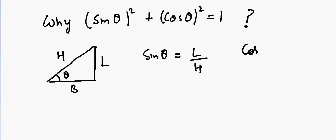cosine of theta, that should be equal to base divided by hypotenuse. So if I square this, sine theta squared plus cosine of theta squared, that should be equal to...